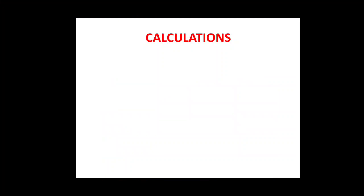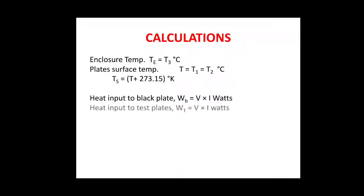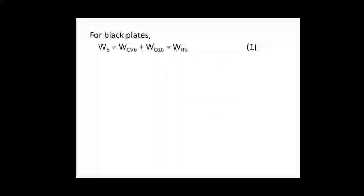We will go to the calculation to find out the emissivity. First, we have to know that enclosure temperature is given by thermocouple T3. Surface temperature is given by thermocouples T1 and T2, which we will maintain as equal. Then we have to add 273 to convert degree Celsius readings to degree Kelvin. Heat input to the black plate will be given by V into I, and it is the same for the test plate. For the black plate, heat input will be equal to the summation of heat losses by convection, heat losses by conduction, and heat losses by radiation. Similarly, for the test plate, heat input will be given by the summation of heat losses through conduction, convection, and radiation.